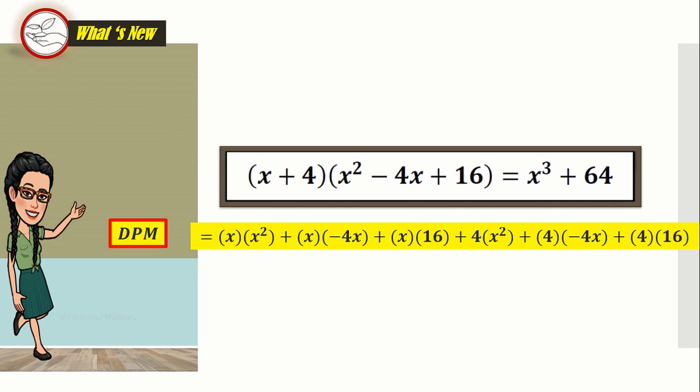With the distributive property of multiplication, we can distribute the terms in our first multiplicand to the terms in our second multiplicand. x times x squared, x times negative four x, x times sixteen, four times x squared, four times negative four x, and four times sixteen.